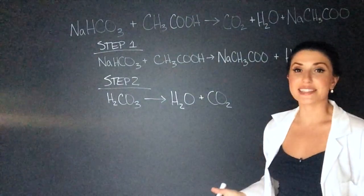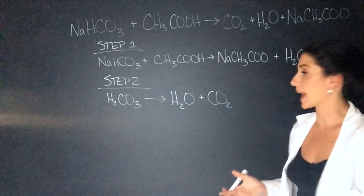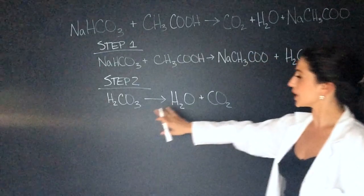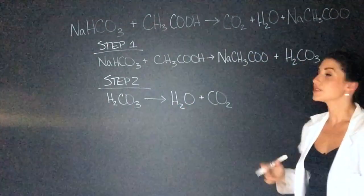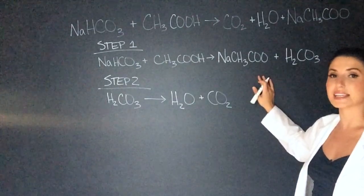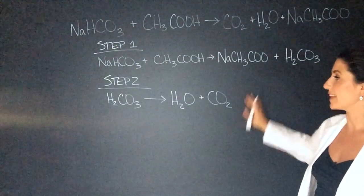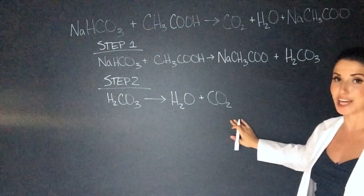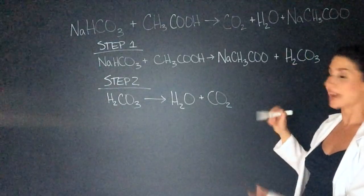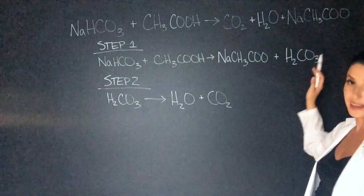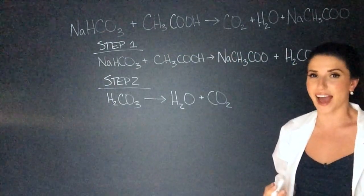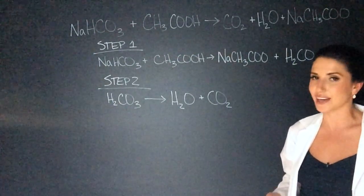So in step two we have a decomposition of carbonic acid. Carbonic acid breaks down into H2O water and carbon dioxide gas. So this first step is called a double displacement reaction and this second step is called a decomposition. When we add these together the carbonic acid gets cancelled out and we get this main equation. And we'll learn how to add and subtract equations together later on my channel.